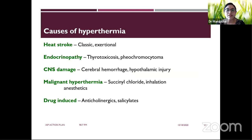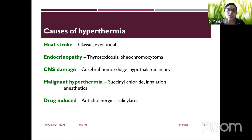The classical causes of hyperthermia include heat stroke, very common in South India especially in summer months when people work or children play outside in the sun and become overheated. Endocrinopathies such as thyrotoxicosis and pheochromocytoma cause increased basal metabolic rate and increased heat production. CNS damage — particularly pontine damage or hypothalamic injury — can also lead to hyperthermia. Malignant hyperthermia results from drugs such as succinylcholine or inhalational anesthetic agents, and drug-induced hyperthermia as in salicylate or anticholinergic poisoning.